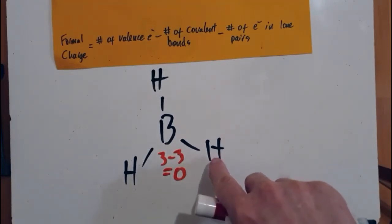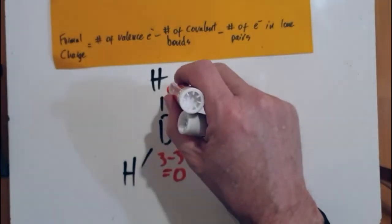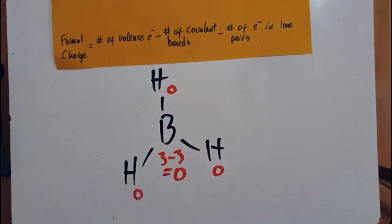Hydrogen, one valence electron minus one bond, that's also going to be zero. Okay, so we're done.